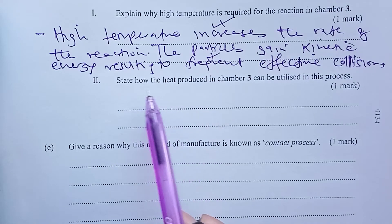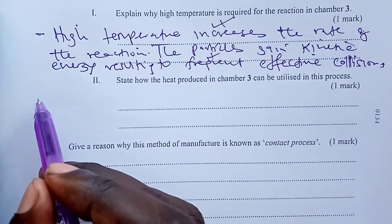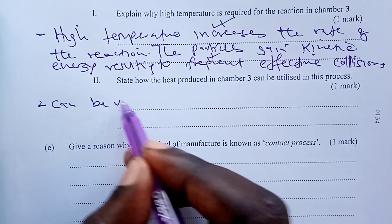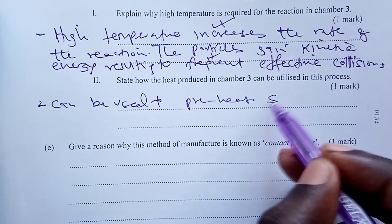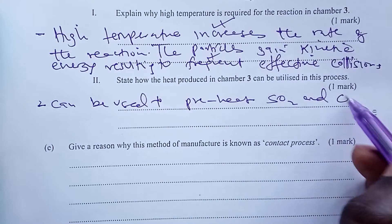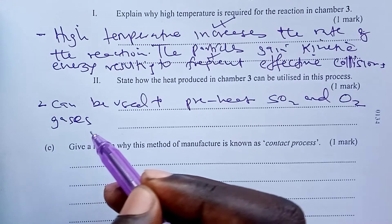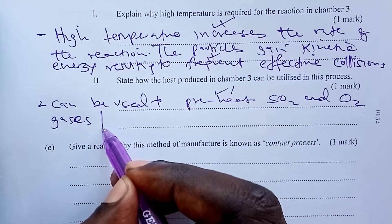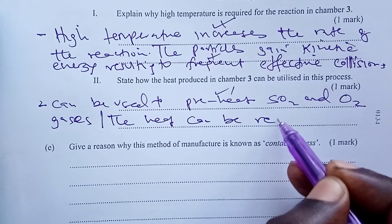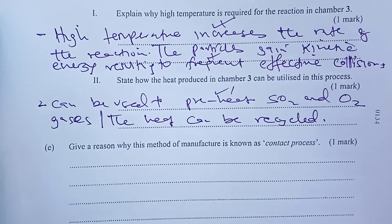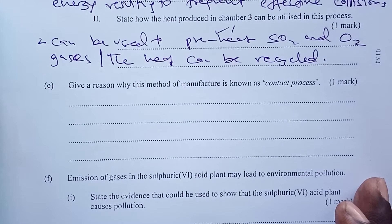State how the heat produced in chamber 3 can be utilized. The heat produced can be used to preheat the incoming gases, which are sulfur dioxide and oxygen — that is one use for one mark. Alternatively, the heat can be recycled. Those were the two options for answering that part of the question.